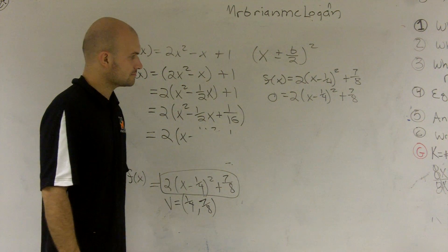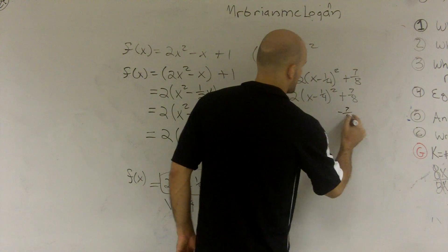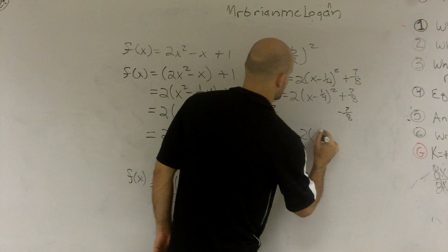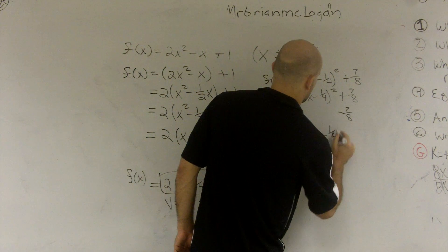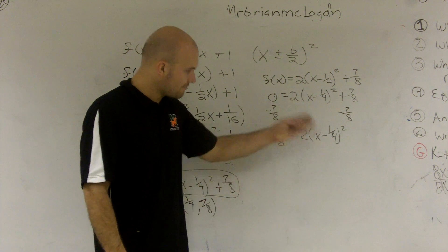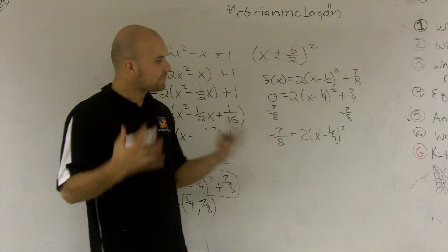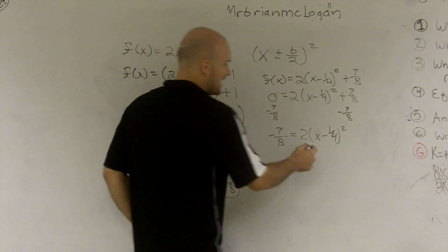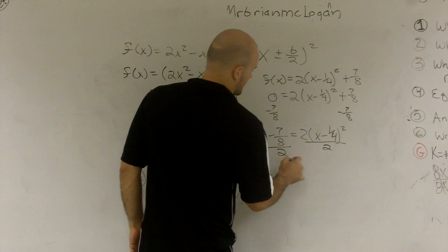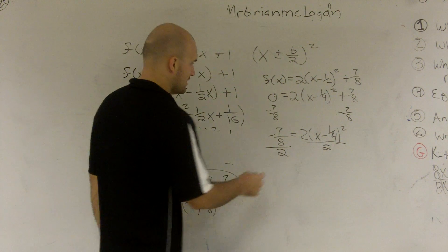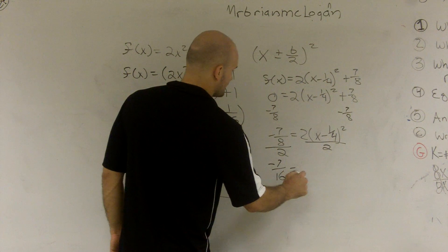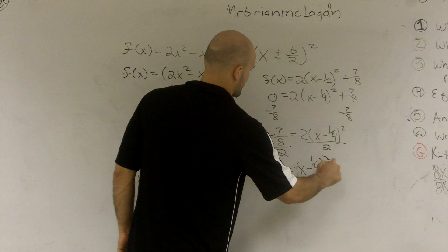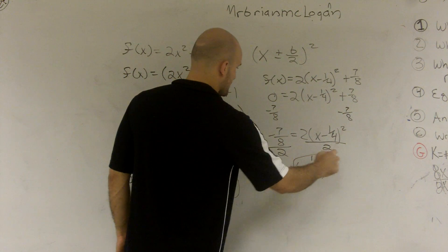Zero equals 2 times x minus 1 fourth squared plus 7 eighths. So you subtract 7 eighths. And the reason why I want to show you this is because this is where so many students make their mistake. Everybody wants to take the square root. Before you can take the square root, you have to undo division of 2. So I'm going to divide by 2.